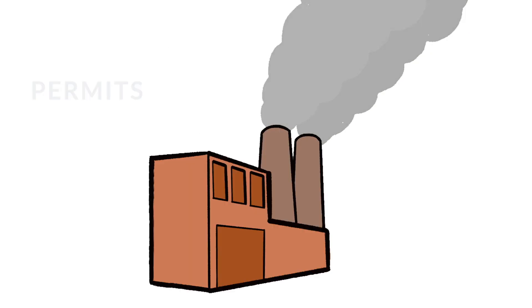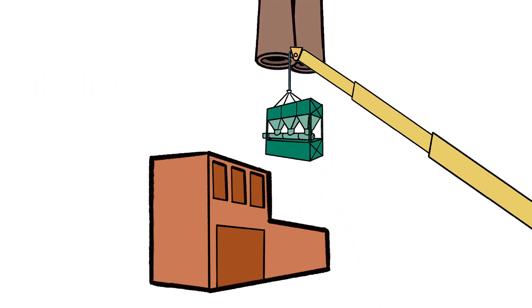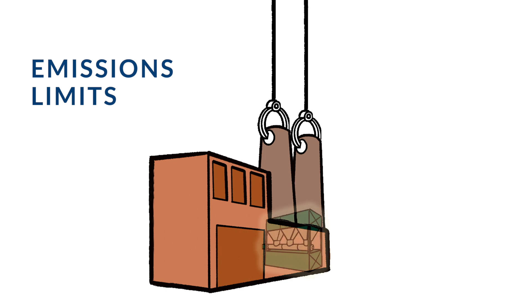Air districts use permits to ensure that stationary sources comply with requirements. These air permits outline conditions for operation and set emissions limits.